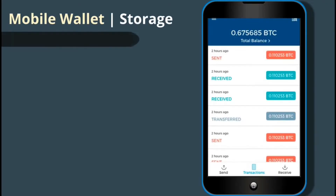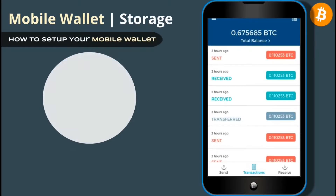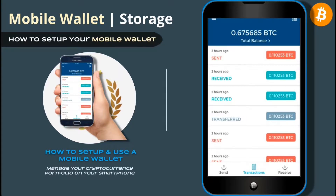Now let's go over how to set up and add cryptocurrency to a mobile wallet. Mobile wallets are similar to desktop wallets, but allow you to manage your portfolio on your smartphone. An example of a mobile wallet would be the Coinbase mobile app we downloaded in the previous section. But if you wanted to set up a different mobile wallet, there are many others available to hold each type of cryptocurrency.